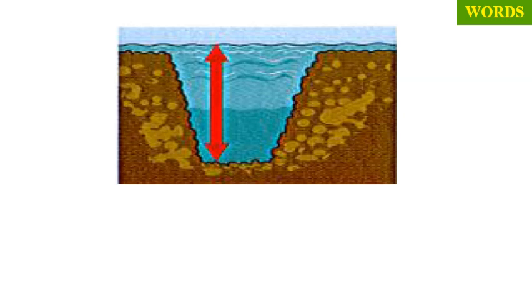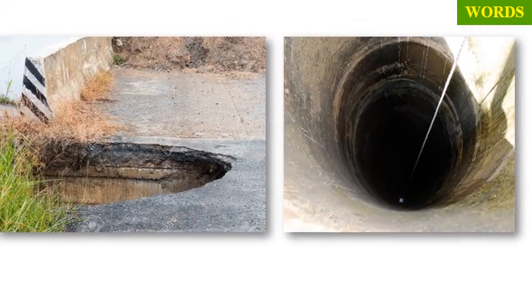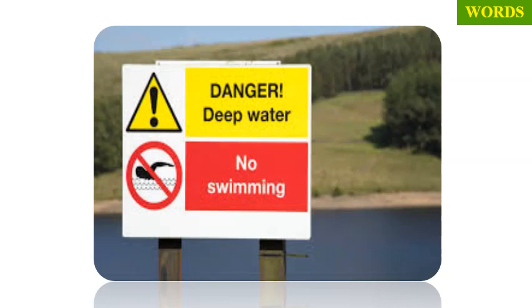Now let's look at the picture then listen and repeat the word. Deep. You can use deep to describe a well, a hole or a river. Now look at the sign in this picture. It means the water is deep here. So, it's dangerous, no swimming.